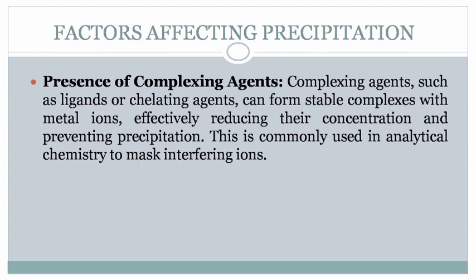Fifth, presence of complexing agents. Complexing agents, such as ligands or chelating agents, can form stable complexes with metal ions, effectively reducing their concentration and preventing precipitation. This is commonly used in analytical chemistry to mask interfering ions.